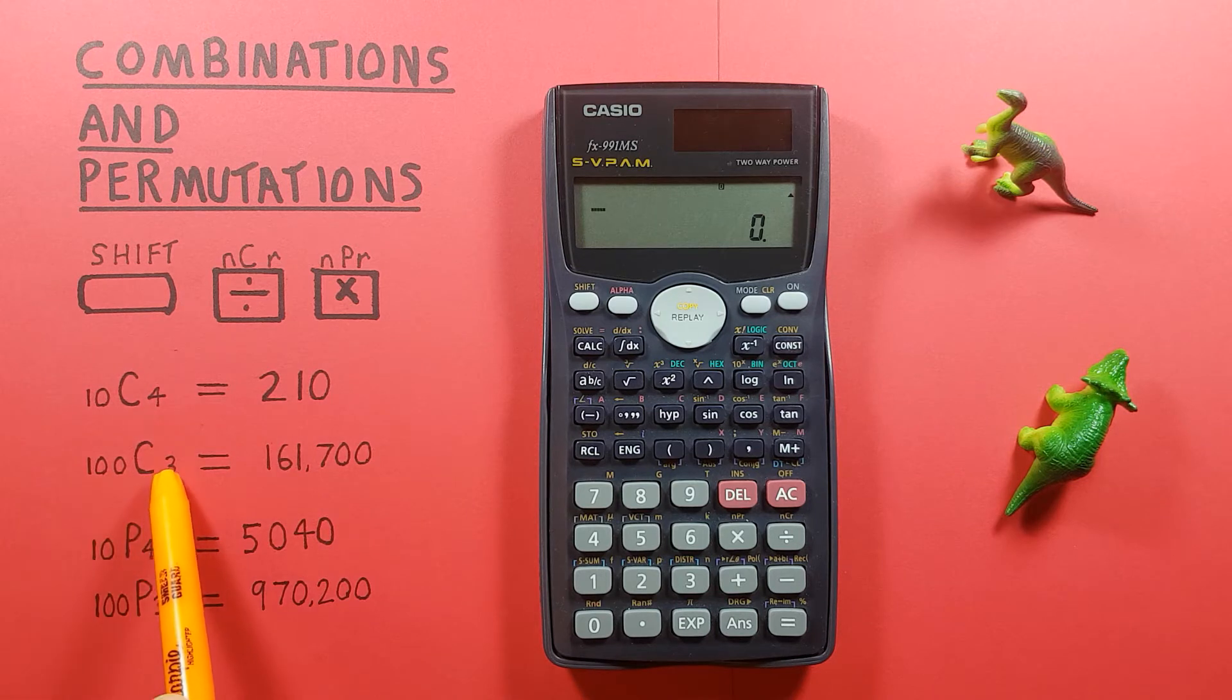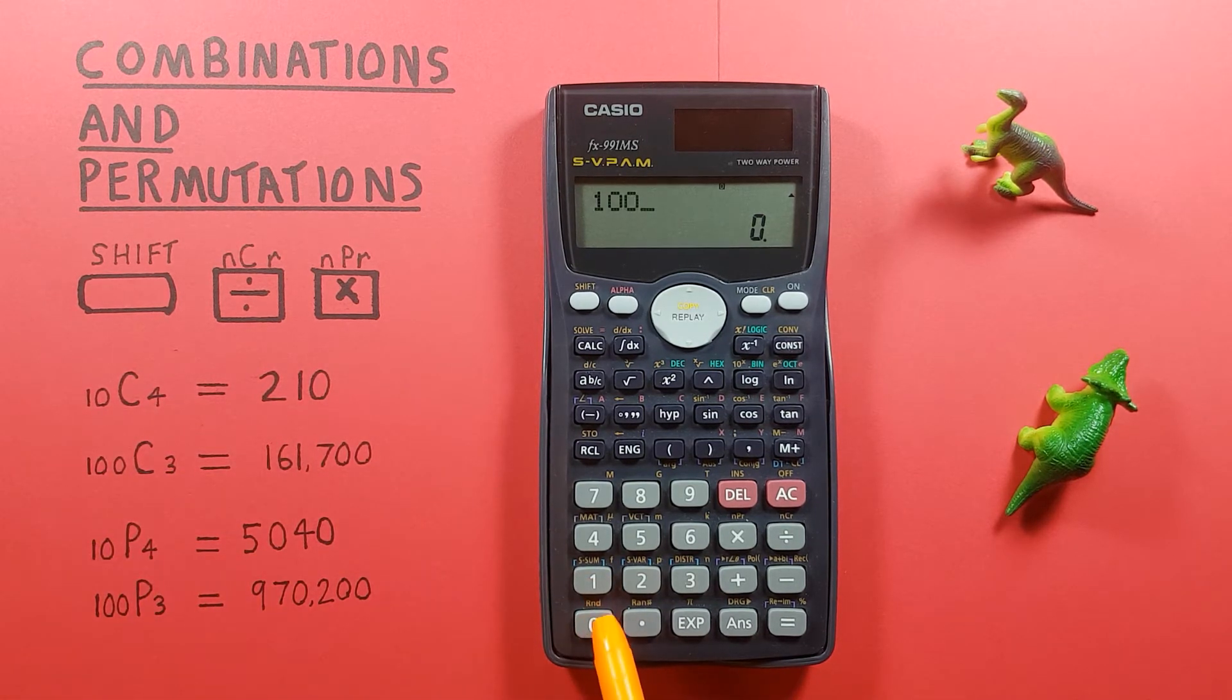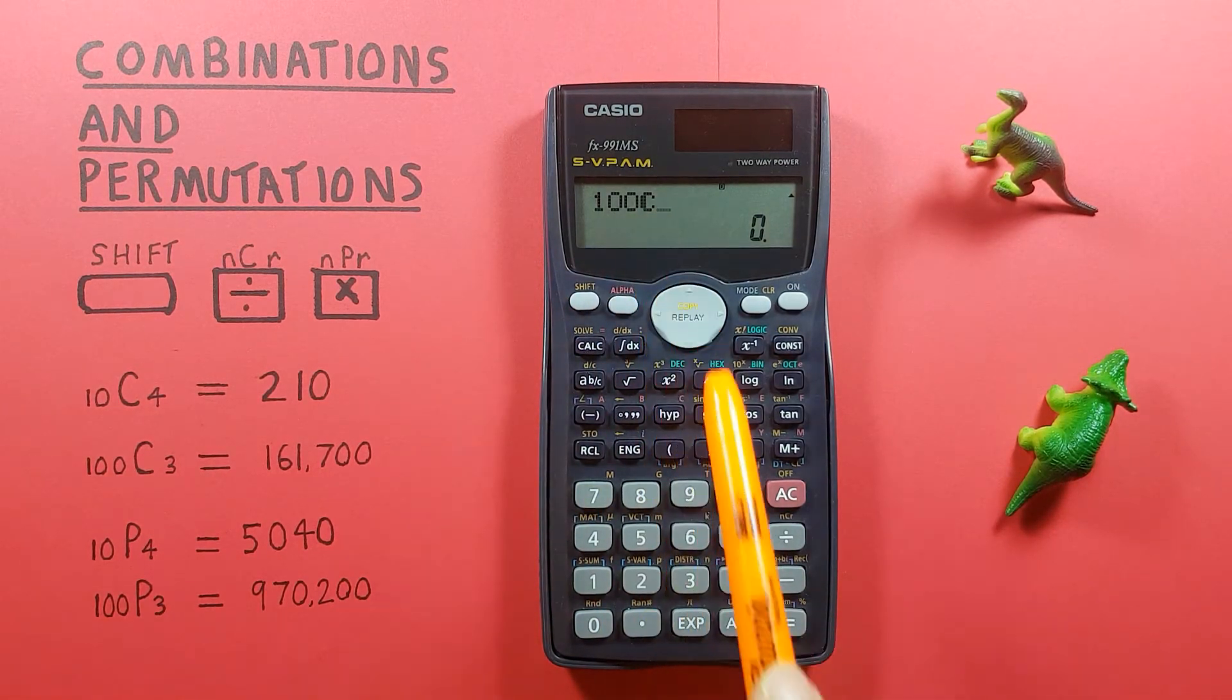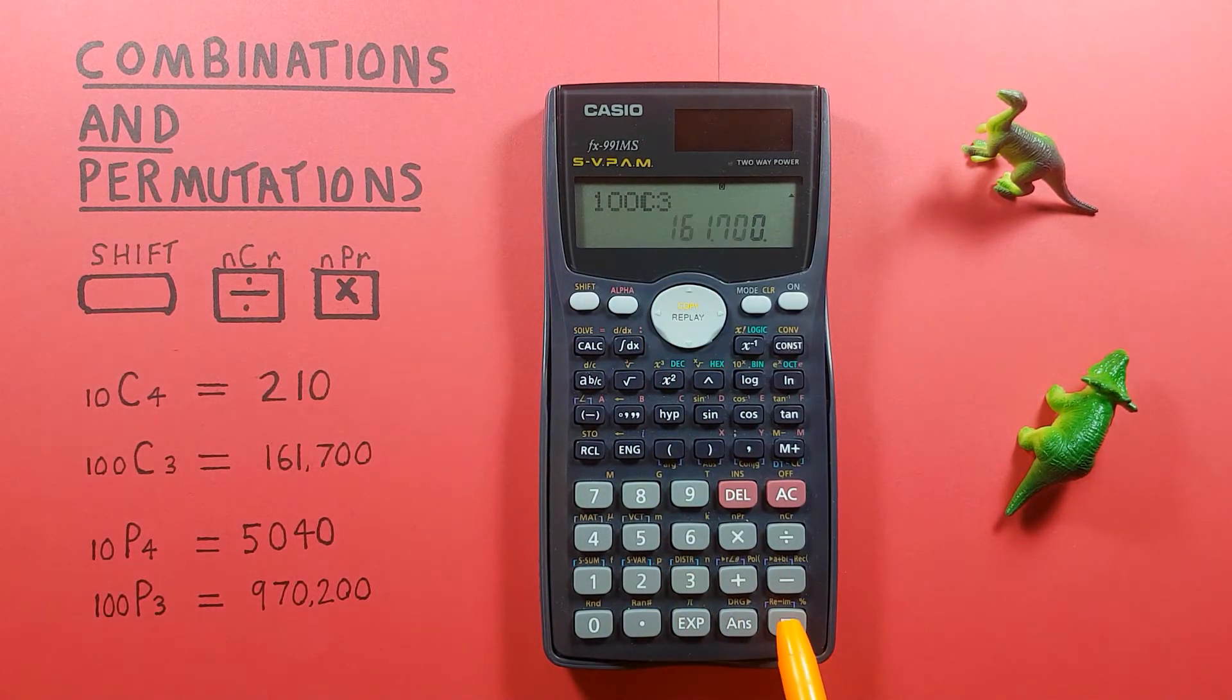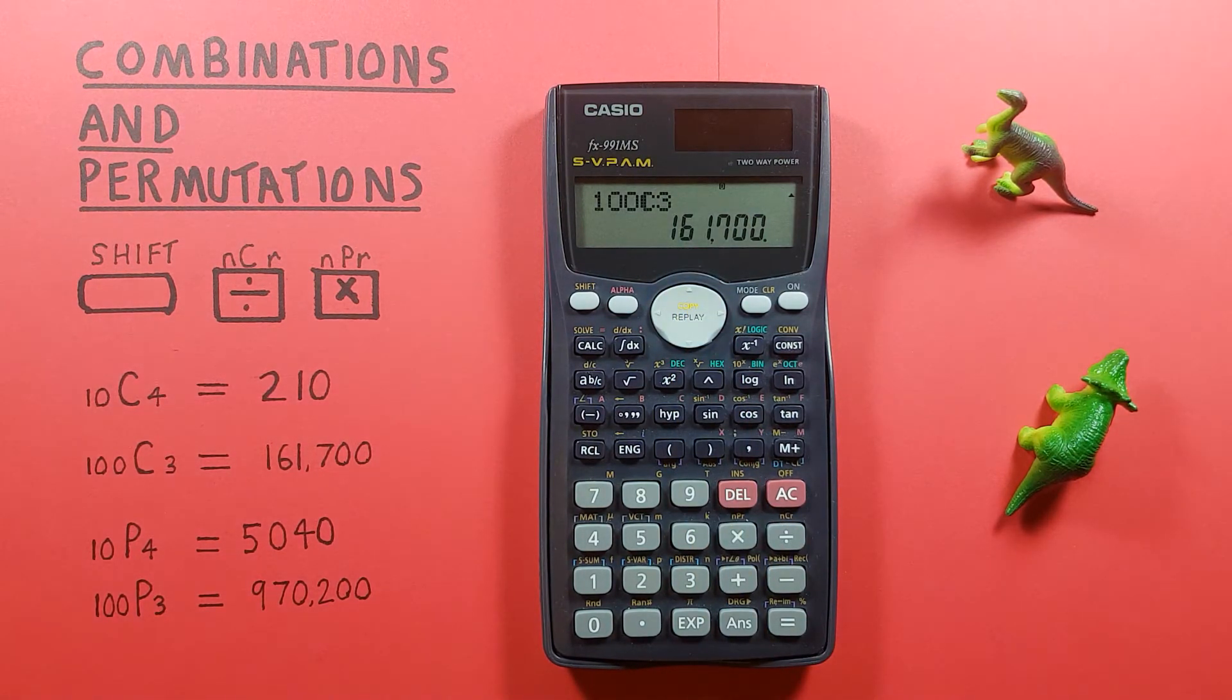Again, if we want to choose three from a set of 100, we enter the 100 first and then press shift divide so that we see the C, and three, equals. And we see we have 161,700 possible combinations there.